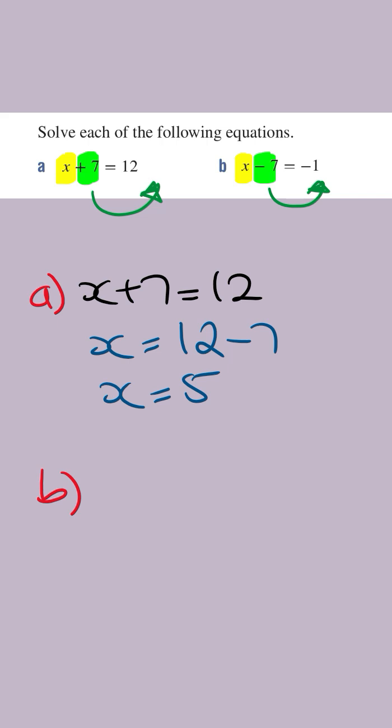Doing the same thing for part B, we've got x minus 7 is equal to minus 1. Now we're going to move this minus 7 to the other side of the equal sign. And when we do, we're going to add it. And so you're going to get x is equal to minus 1 plus 7, minus 1 plus 7 is equal to 6. And so x is equal to 6.